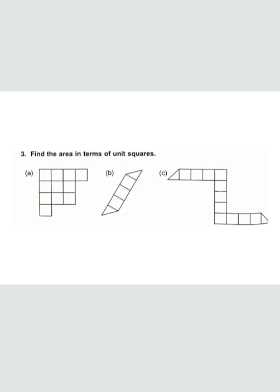Question number three: find the area in terms of unit squares — we just count the squares. Part A: counting gives 11 squares. Part B: 3 full squares and 2 halves make 1, so the answer is 4 squares. Part C: 11 full squares and 2 halves make 12, so the answer is 12 squares. The answers are 11 squares, 4 squares, and 12 squares.